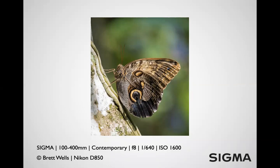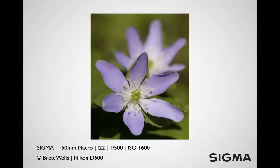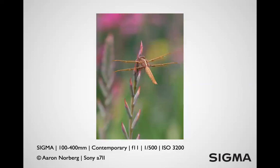This is a purple hepatica at f22 — the front flower is in focus, the back one is soft but still recognizable in shape. I didn't want it completely blurred out, but I wanted focus to separate the two flowers, with the background going really soft.